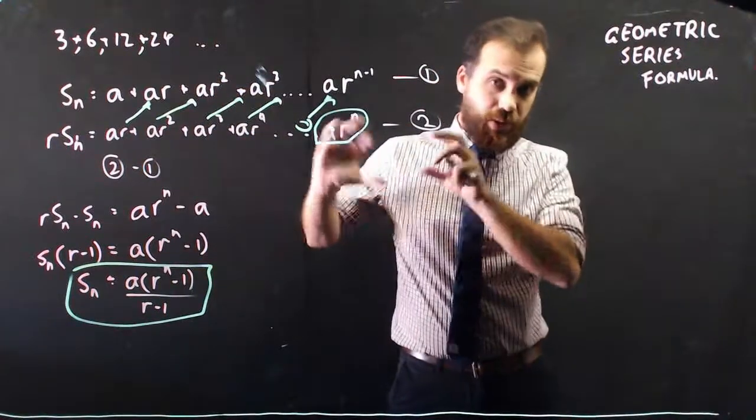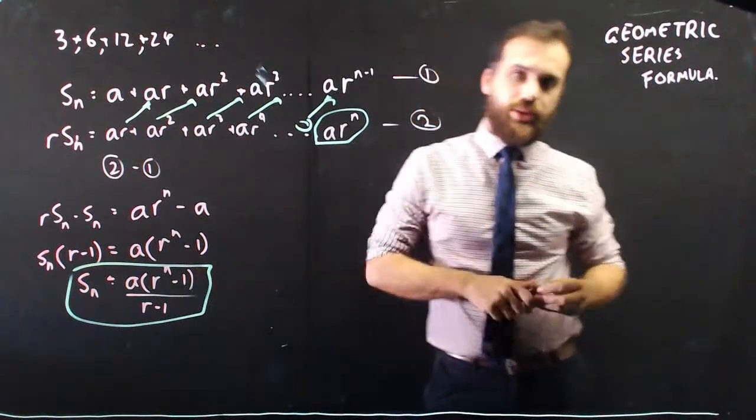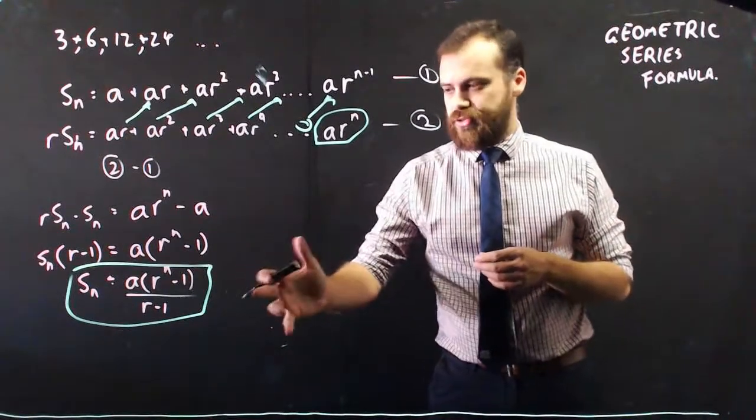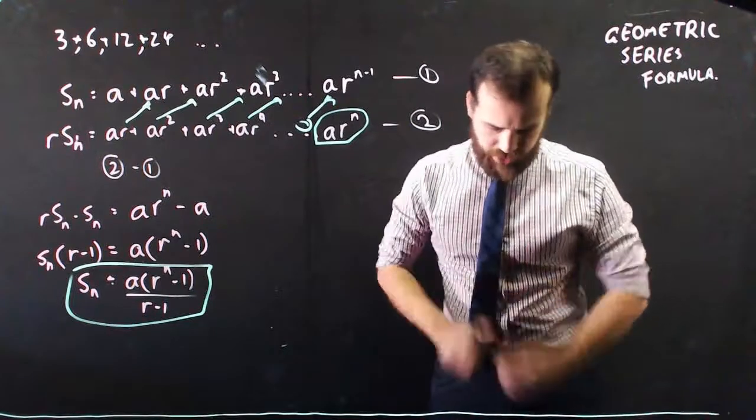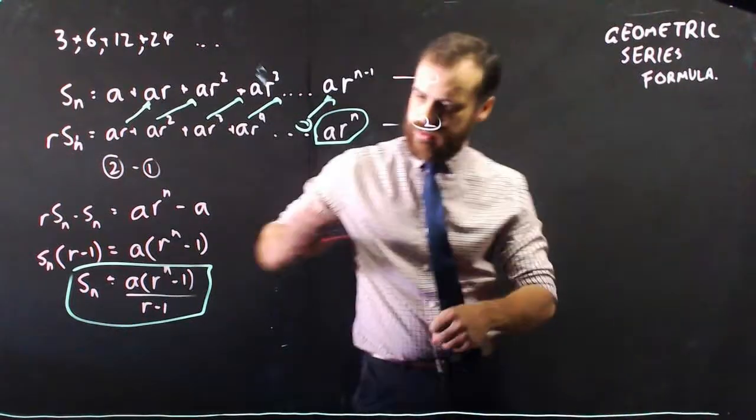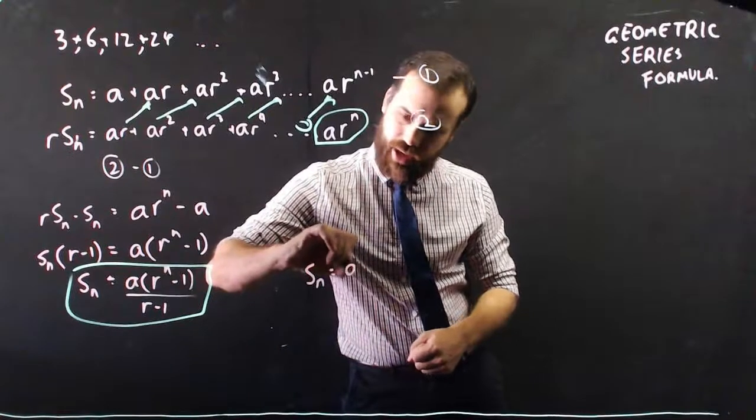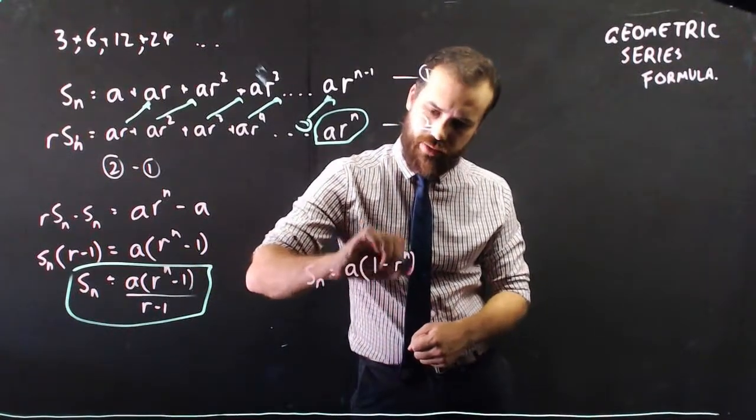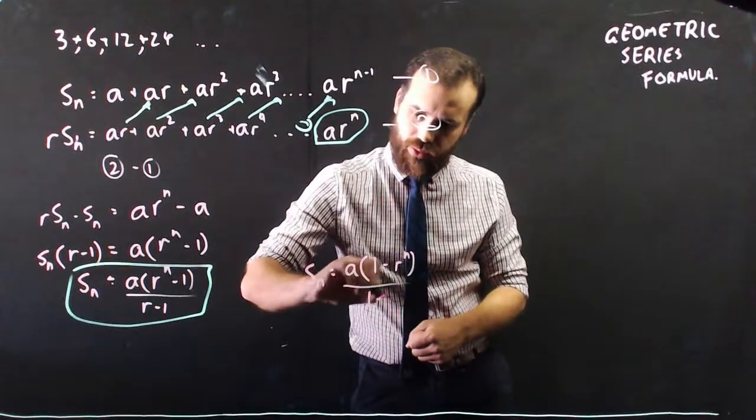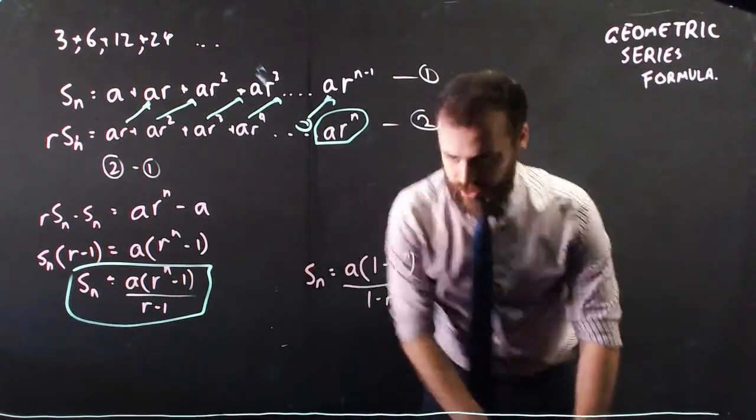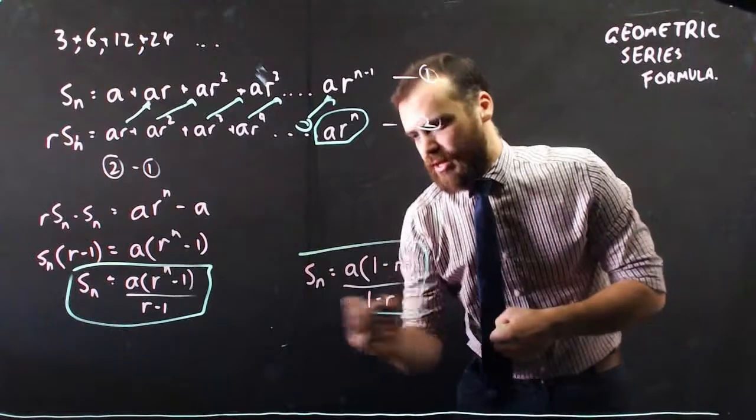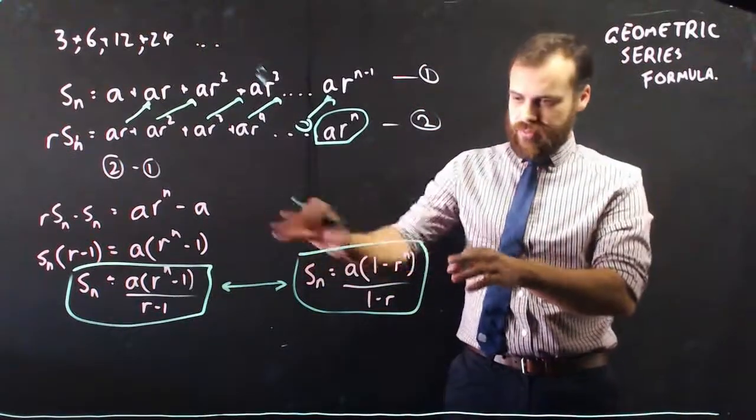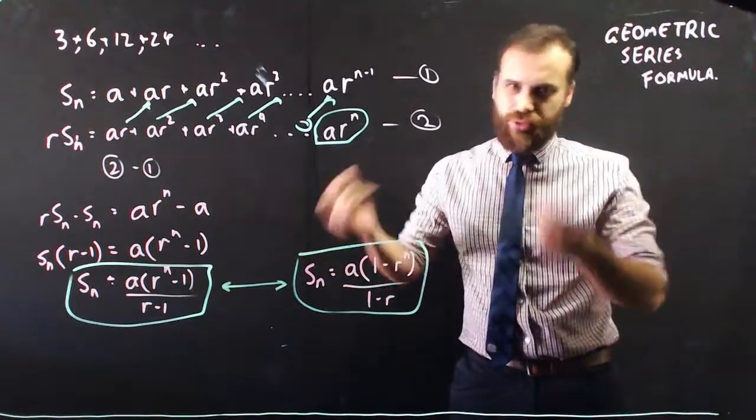You don't need to worry too much about why it works, but there is the formula that you're going to use. The last thing I really need to say is that this formula is useful, but you might also find the equivalent formula useful. S_n equals a times 1 minus r^n over 1 minus r. Now, important to note, these formulas are the same. They might not look the same, but once you rearrange it and muck around with it, I can prove it to you if you like.